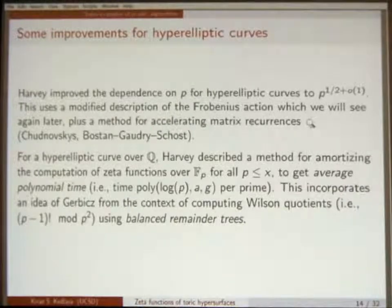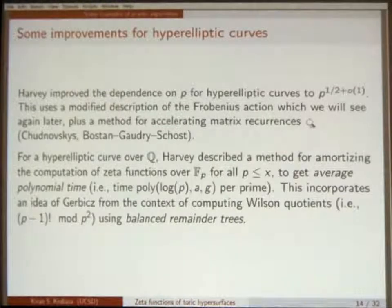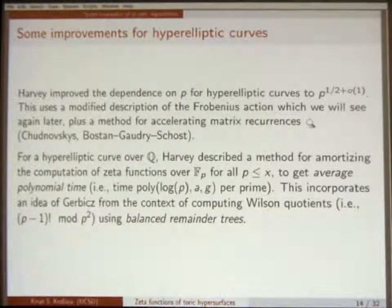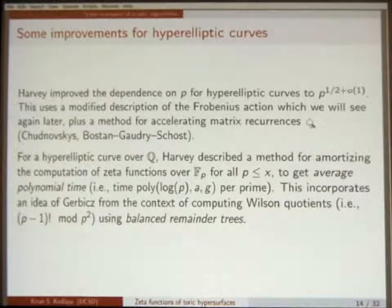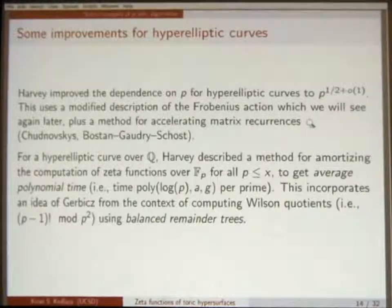David Harvey had a couple of improvements in the hyperelliptic case, particularly for varying p and making p larger. He has an improvement on the dependence on p for hyperelliptic curves to p^(1/2 + O(1)), implemented in Sage, using a modified description of the Frobenius action on p-adic cohomology. It also uses a technique for accelerating recurrences — matrix computation of sequences of matrices defined by recurrence relations.